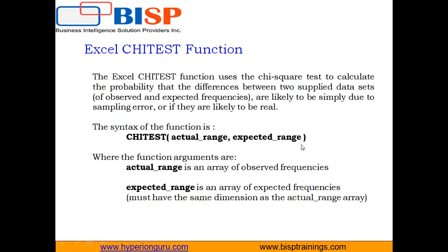The test of association is used to determine whether one variable is associated with a different variable — for example, whether sales for different colors of cars depends on the city where they are sold. Bear in mind that the chi-square test is not reliable when expected values are too small. As a guideline, if any expected values are less than 5, or if the total of the expected values is less than 50, we should not rely on the result.